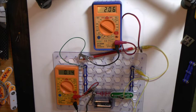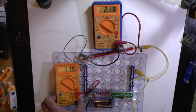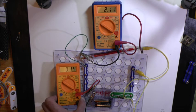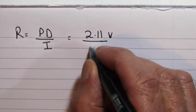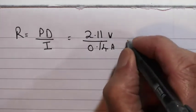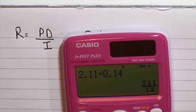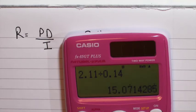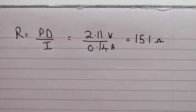So setting this circuit up, switching it on, you can see the values of current and potential difference varying slightly but as they steady down: 2.11 and 0.14. In the calculation, resistance is potential difference over current: 2.11 volts divided by 0.14 amps. Quickly doing that, 211 over 14, which is 15.07, so to three significant figures, 15.1 ohms.